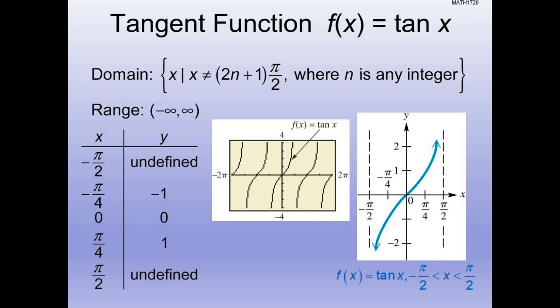Cosine is zero at pi over 2 — 90 degrees — and also at 3 pi over 2, or 270 degrees. So anytime cosine is zero, tangent is undefined. That happens twice in one complete circle. That's why graphing tangent and cotangent is a little different. The period for tangent and cotangent is less than the period for sine or cosine because cosine is zero twice in one 360-degree or one 2-pi circle.